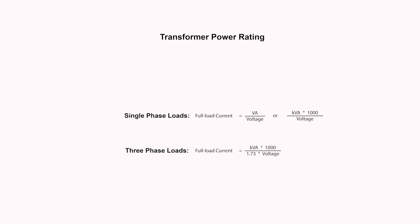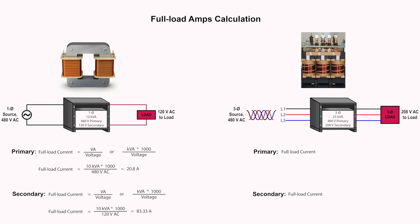Let's look at some examples of how full load currents are calculated. Here we have a single phase 10 kilovolt amp transformer rated 480 volts primary and 120 volts secondary. With the information given and using the full load current equation, the primary and secondary full load current are calculated as follows.